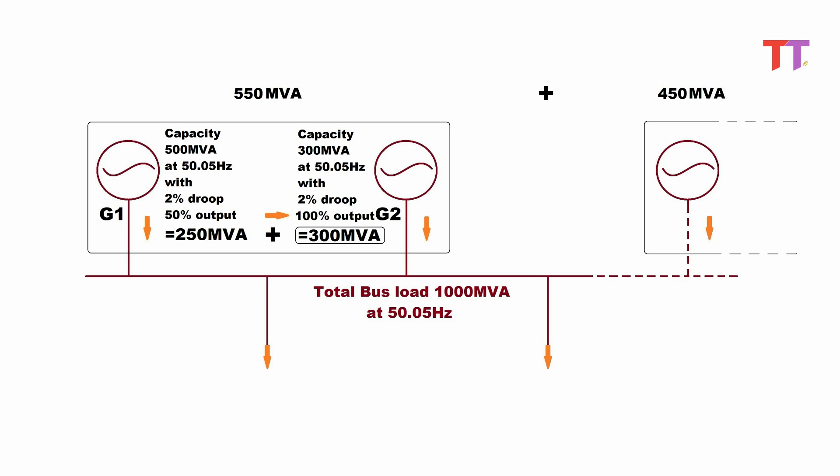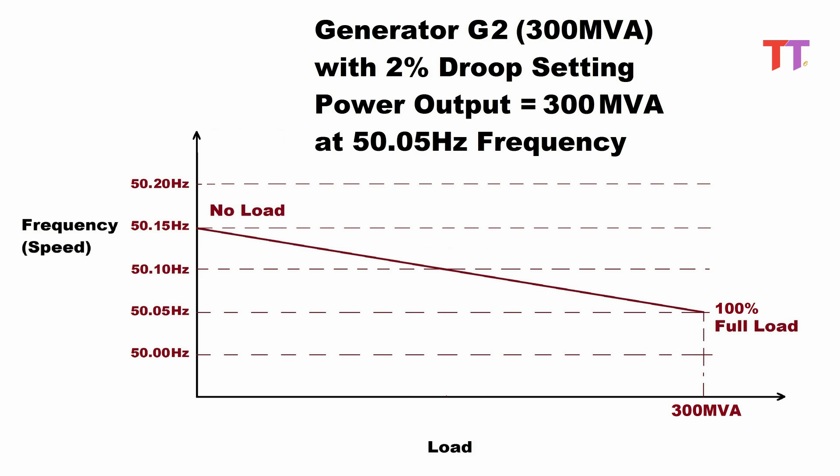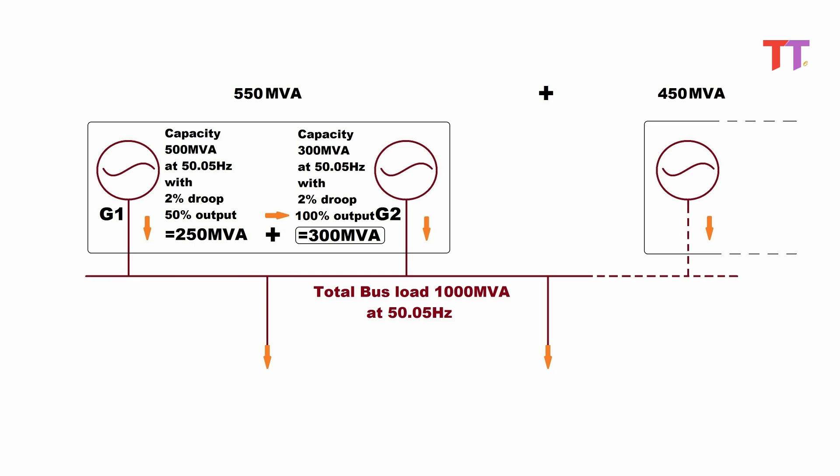Now let's say we want to load generator G2 at 100% of its capacity, delivering 300 MVA load. So the speed reference for G2 is raised to 50.15 Hz from 50.10 Hz. With the new droop setting, G2 is loaded at 100%, delivering 300 MVA load at 50.05 Hz frequency, which is bus frequency. Now generator G1 and G2 deliver 250 MVA and 300 MVA load respectively. That means out of 1000 MVA load demand of the bus, 550 MVA is supplied by G1 and G2, and the rest 450 MVA is supplied by other generators running in parallel.